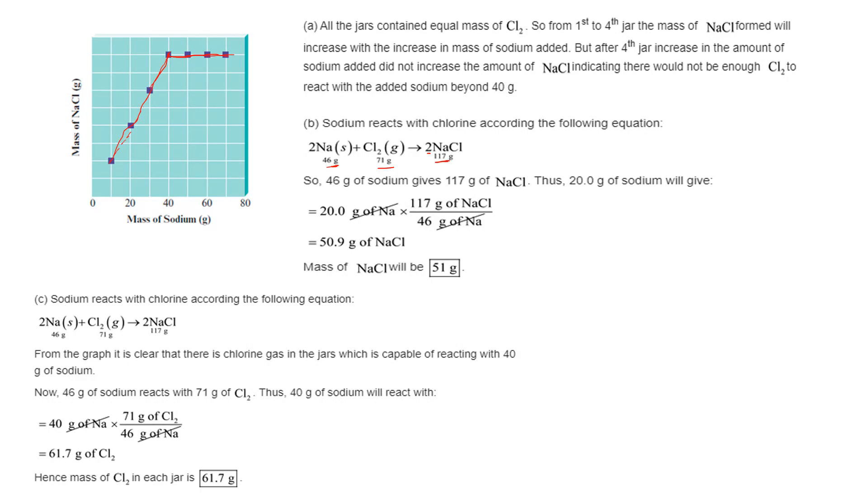We're just going to do a proportion. If you have 46 grams of sodium giving you 117 as you can see in the equation, then you want to know how much this is going to represent, and that's going to be 50.9 in the NaCl.